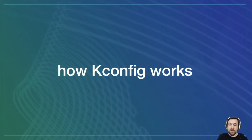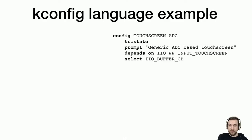So let's first take a look at how this config language and system works. Here's an example of a configuration option defined in a recent version of the Linux kernel. And it first declares the name of the option, in this case, touchscreen ADC. It declares it to be a particular type, in this case, tri-state.